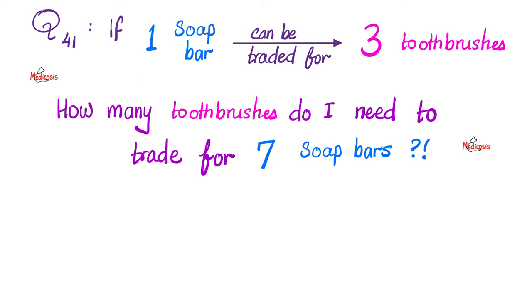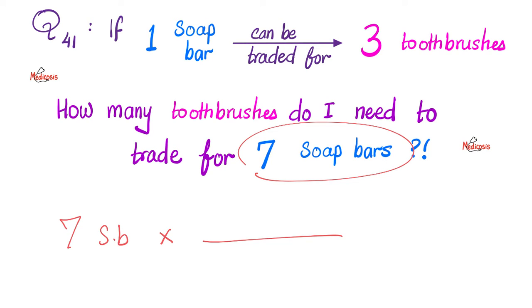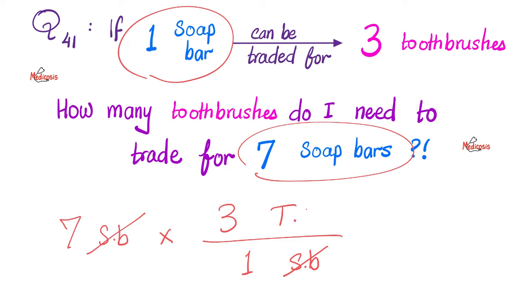Let's answer the question of the previous video. If one bar of soap can be traded for three toothbrushes, how many toothbrushes do I need to trade for seven soap bars? How do we do this? Dimensional analysis. Start with the given — I have seven soap bars — then multiply by the conversion factors. I want to cancel soap bars with soap bars, so soap bars go in the denominator. One soap bar gives me three toothbrushes — that's the conversion factor. Seven times three is 21 toothbrushes. Bingo.